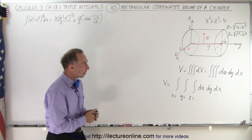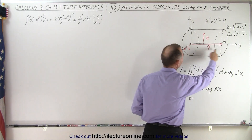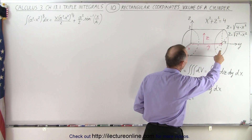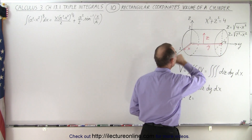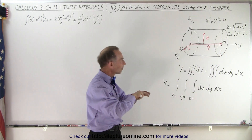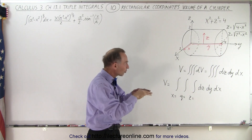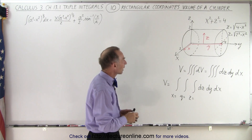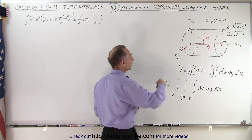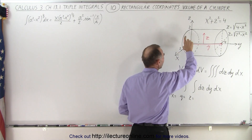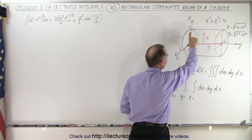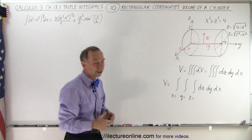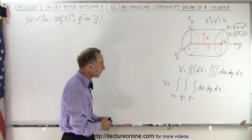Our cylinder has a length of 4 in the y direction and a radius of 2. Notice that it's a circular cylinder, not an elliptical cylinder, so the x direction and z direction are the same — 2 units in each direction, essentially the radius of the cylinder.